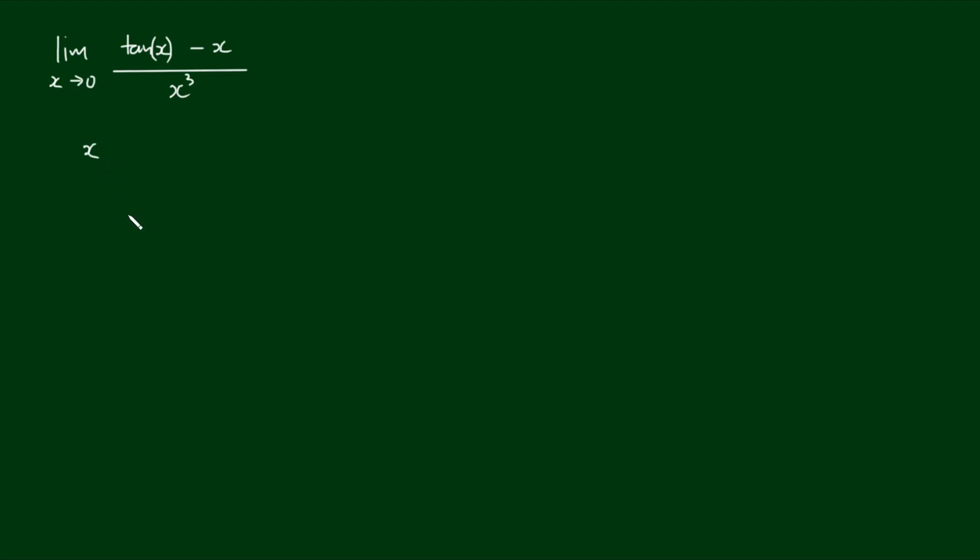So I'm going to construct myself a table. I'll have a column of x values. Let's call this function h of x. h of x is equal to the tangent of x minus x divided by x cubed.